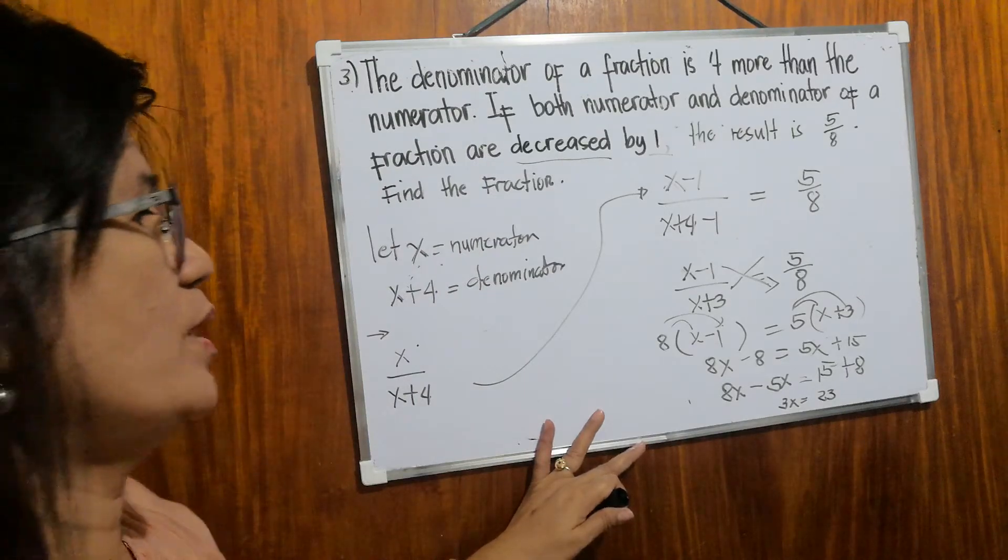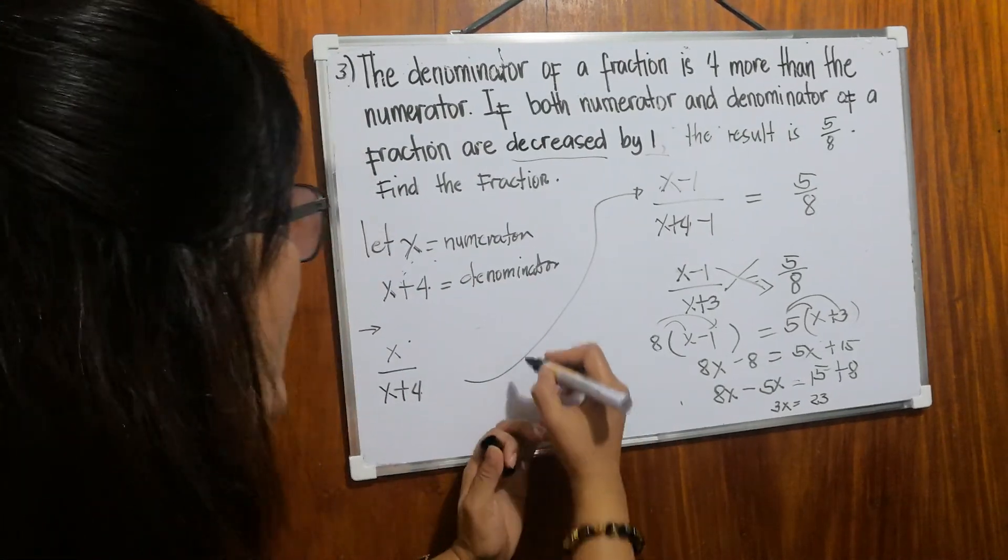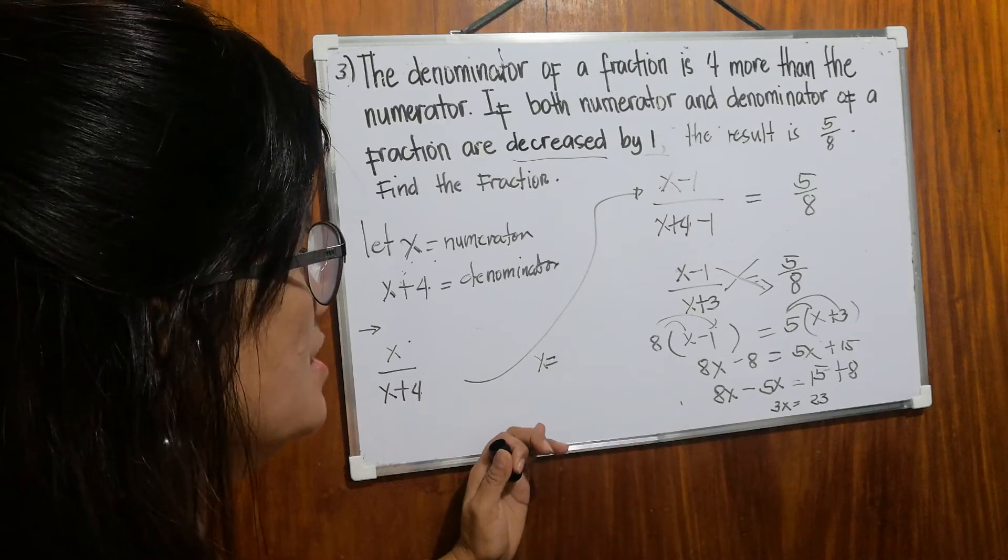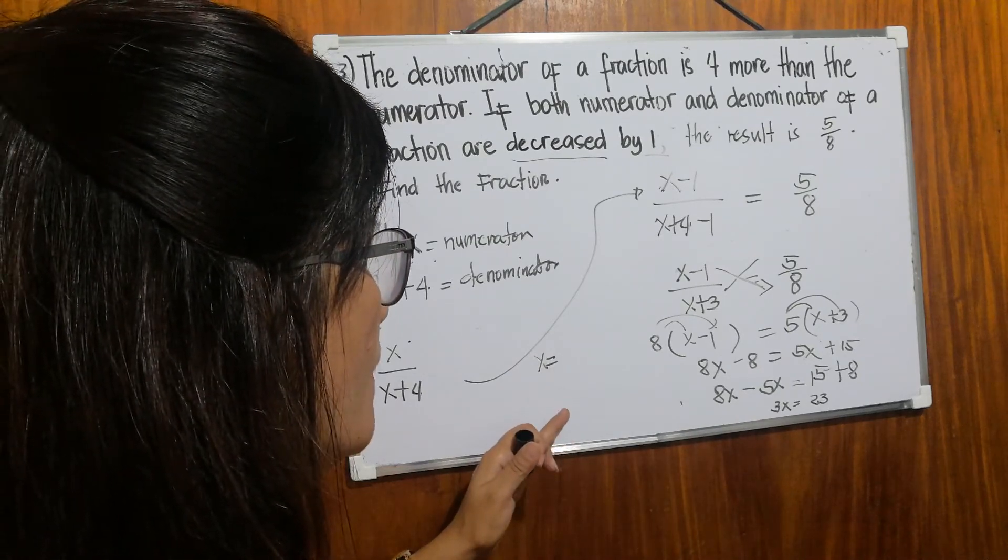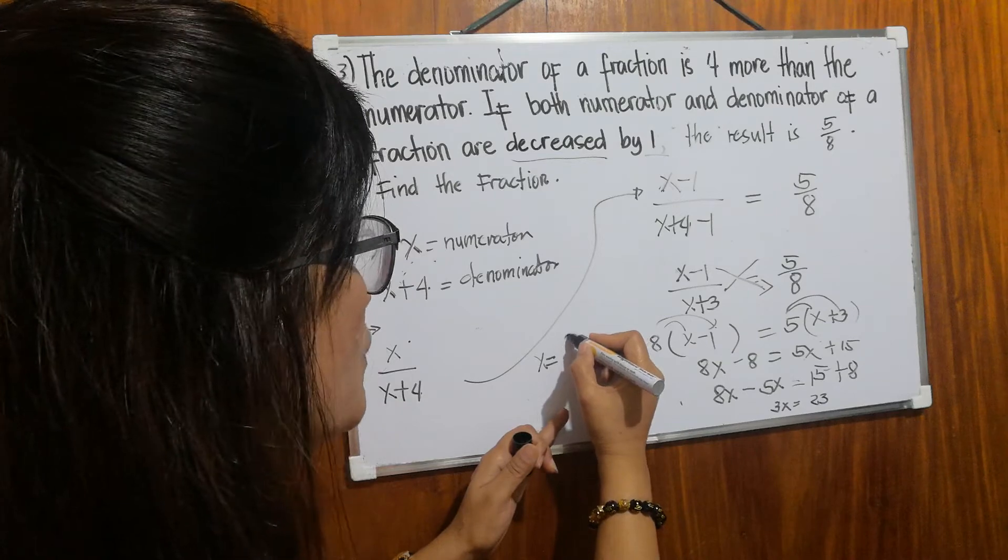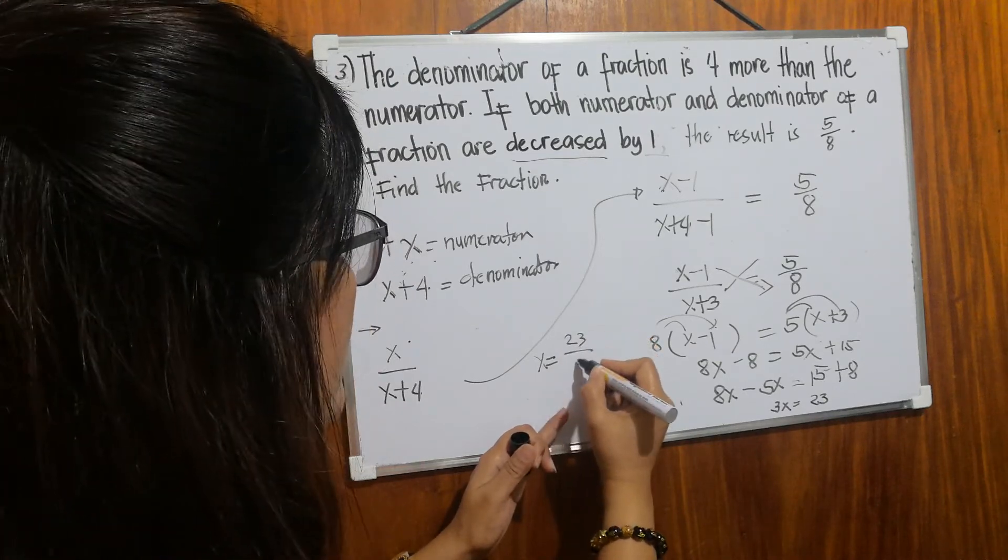Is that correct? Eighteen. Yes, twenty-three. So x equals twenty-three over three.